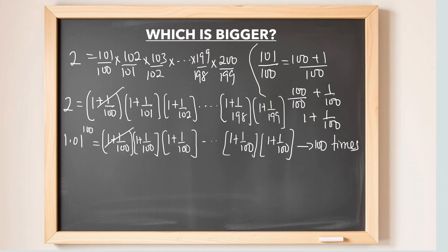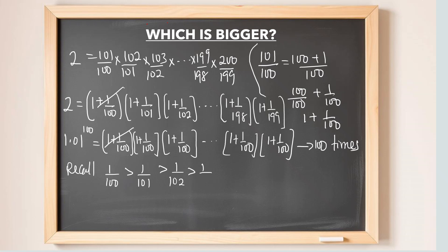The key rule is: the higher the denominator, the lower the value of the fraction. Just like 1 over 2 is greater than 1 over 3. So, 1 over 100 is greater than 1 over 101, which is greater than 1 over 102, greater than 1 over 103, and greater than 1 over 199. That means for every corresponding factor in equation 2, the denominator is higher, making each factor smaller than those in equation 1.